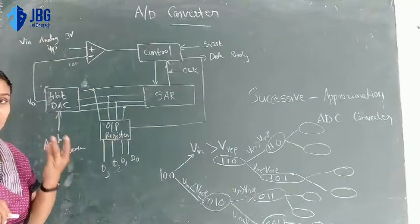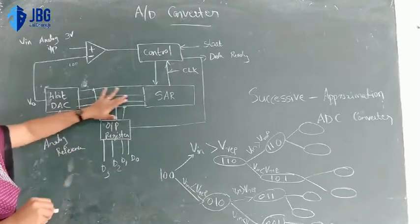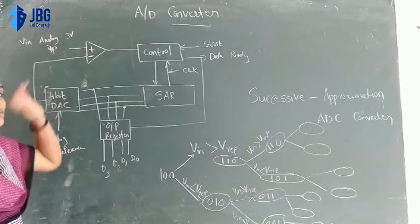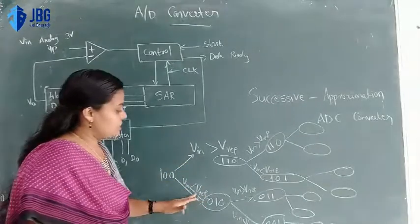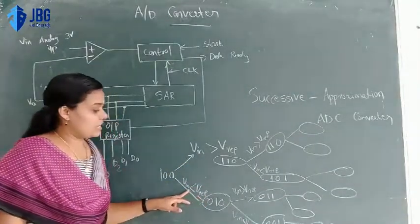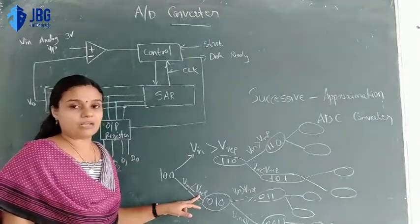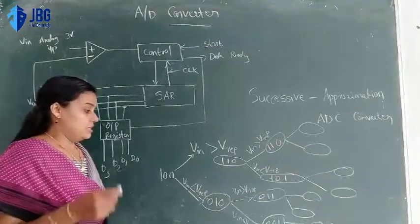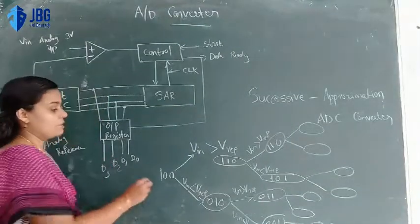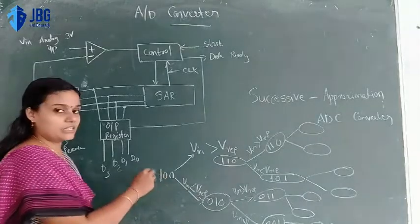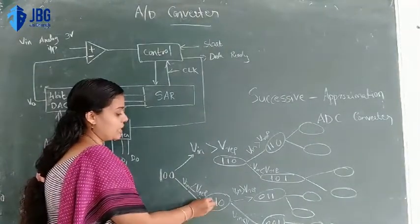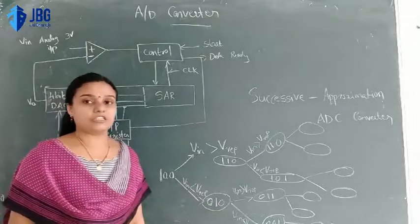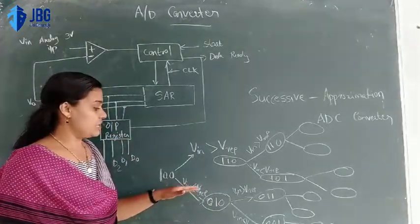A negative pulse is added to the input. This is the reference. The reference value is compared against the unknown input signal. We make the reference level for the unknown input signal. The reference level is first set. When the set bit is 1 and then 0, we are now at the condition where the input signal is less than the reference.